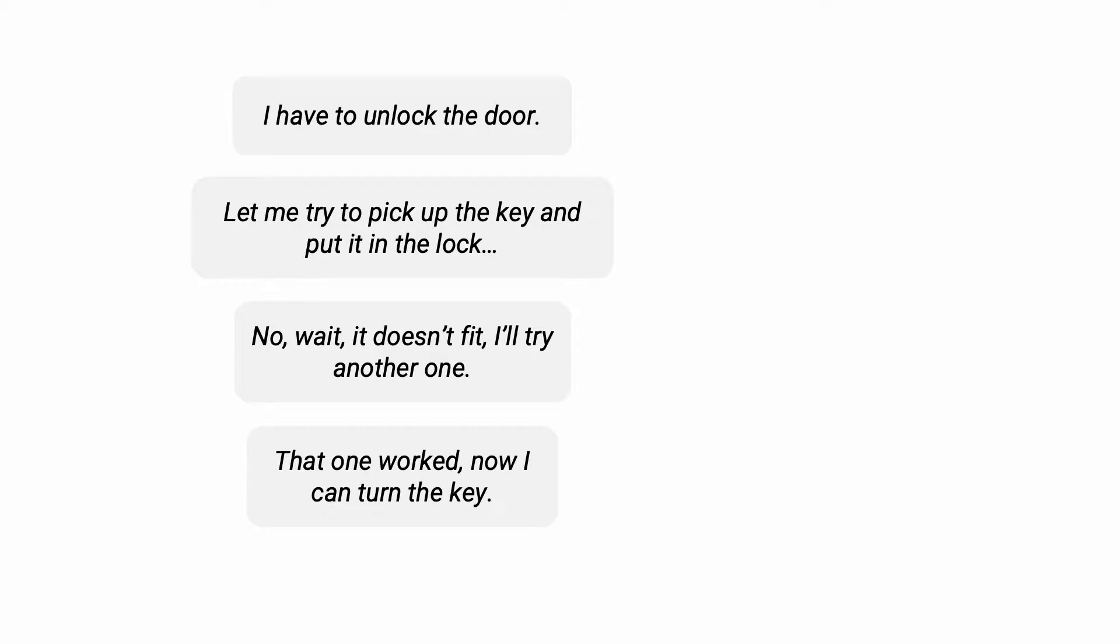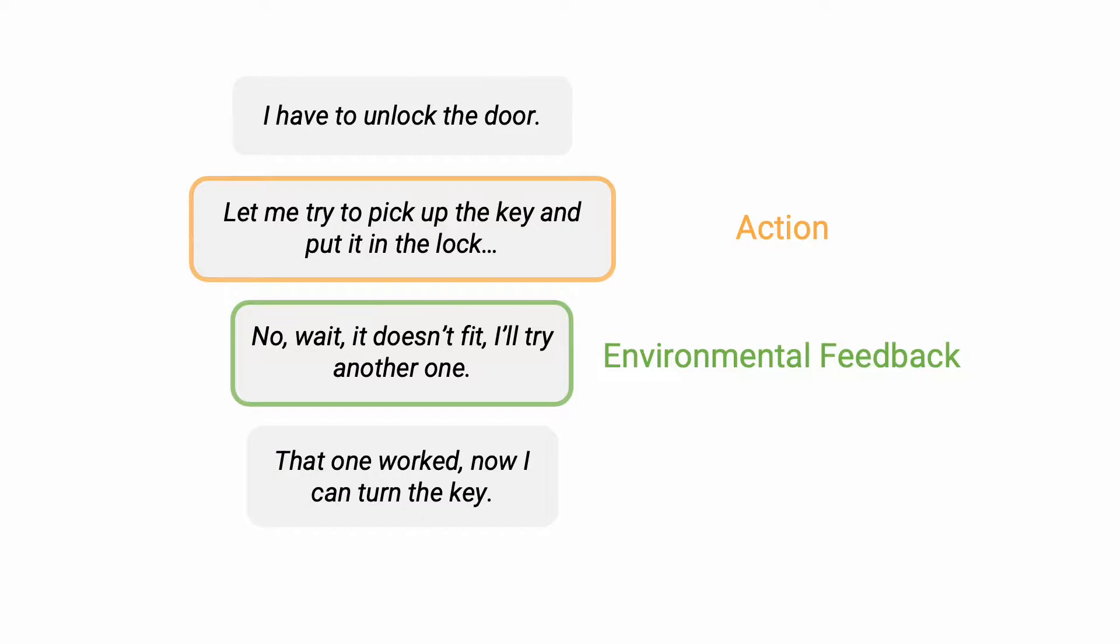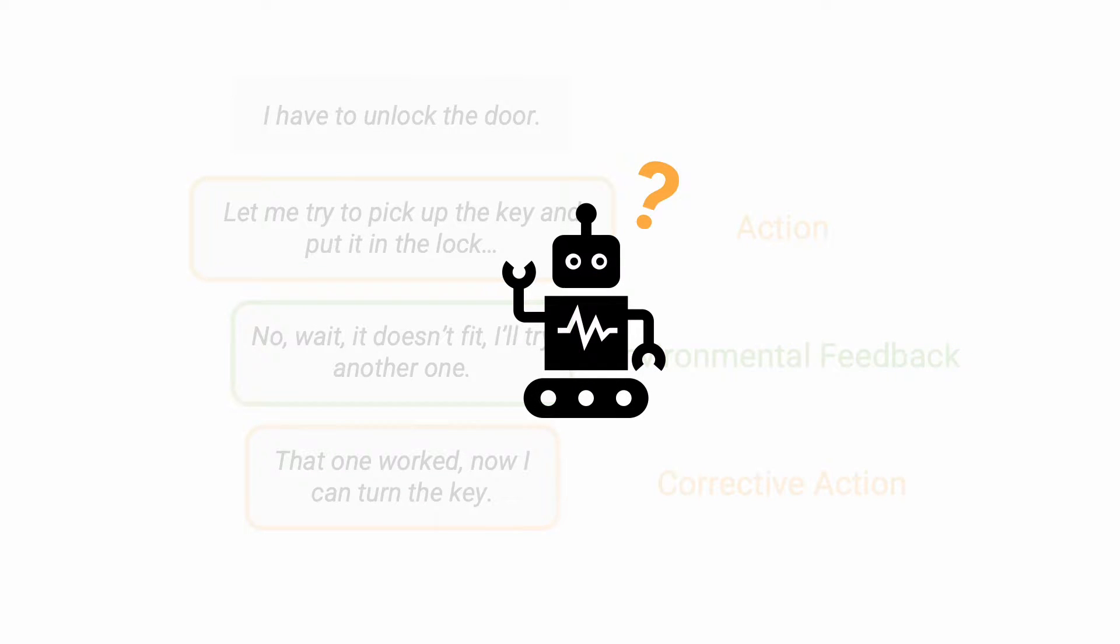The thought process in this case involves choices about the best immediate action to solve the high-level task, observations about the outcomes of attempted actions, and corrective actions that are taken in response to these observations. Can an embodied agent, like a robot, plan actions with semantic feedback for such tasks?